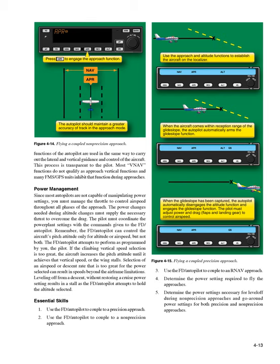This process is transparent to the pilot. Most VNAV functions do not qualify as approach vertical functions and many FMS/GPS units inhibit that function during approaches. Power Management. Since most autopilots are not capable of manipulating power settings, you must manage the throttle to control airspeed throughout all phases of the approach. The power changes needed during altitude changes must supply the necessary thrust to overcome the drag. The pilot must coordinate the powerplant settings with the commands given to the FD/autopilot. The FD/autopilot can control the aircraft's pitch attitude only for altitude or airspeed, but not both.